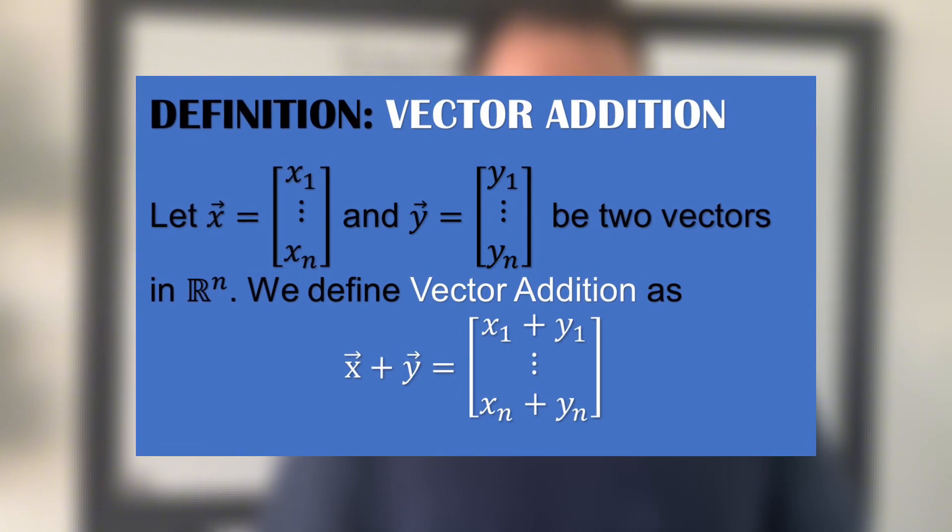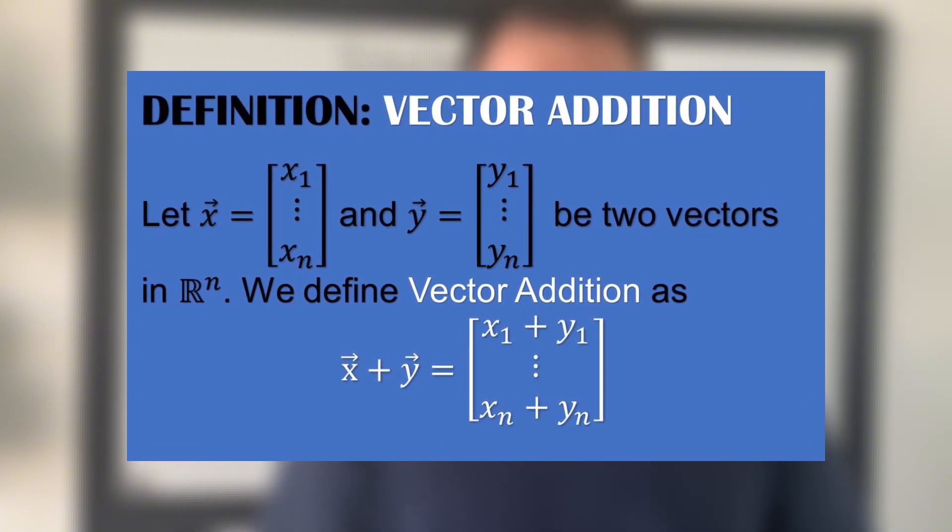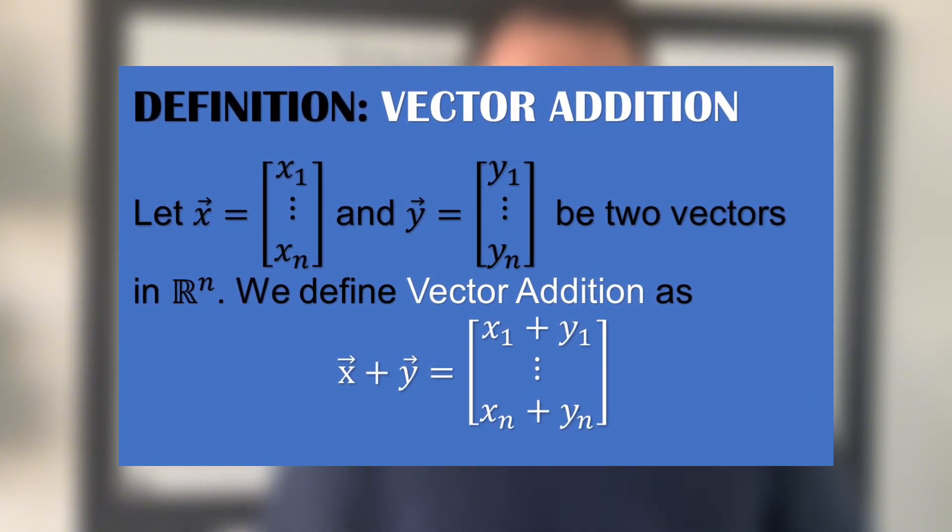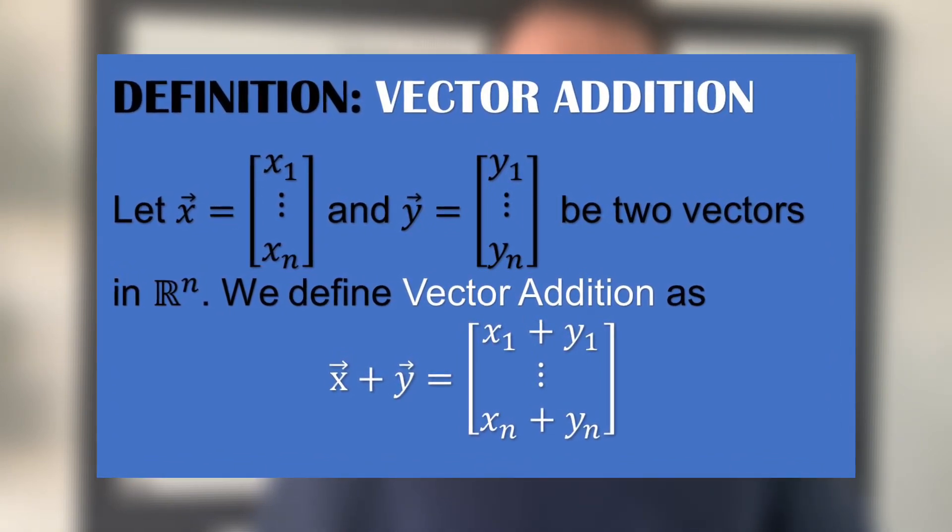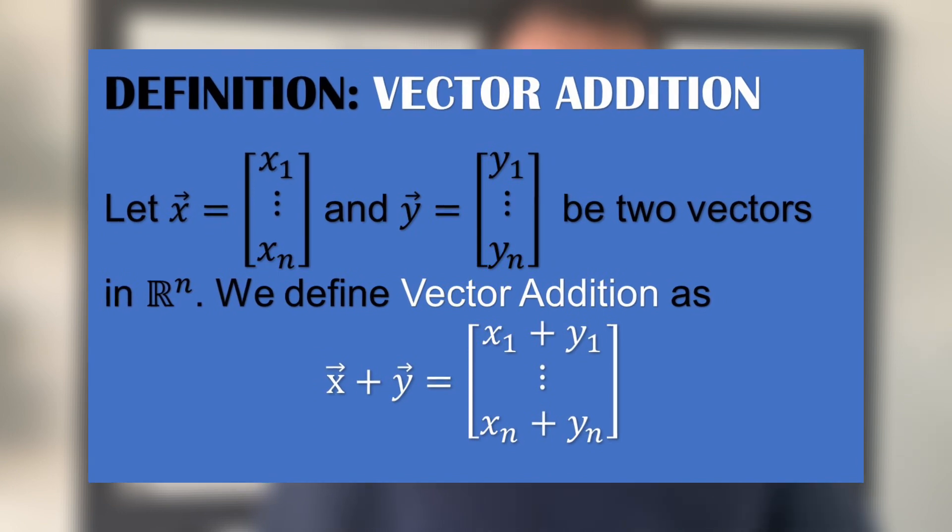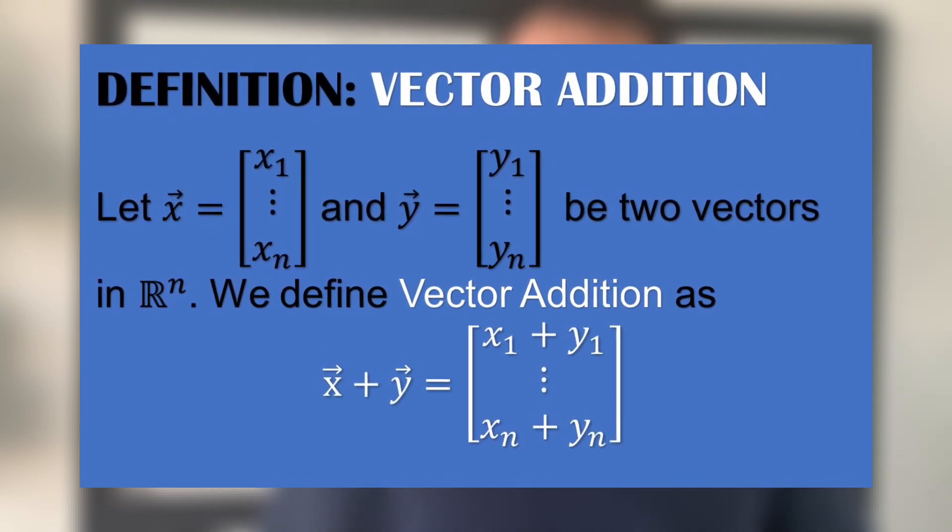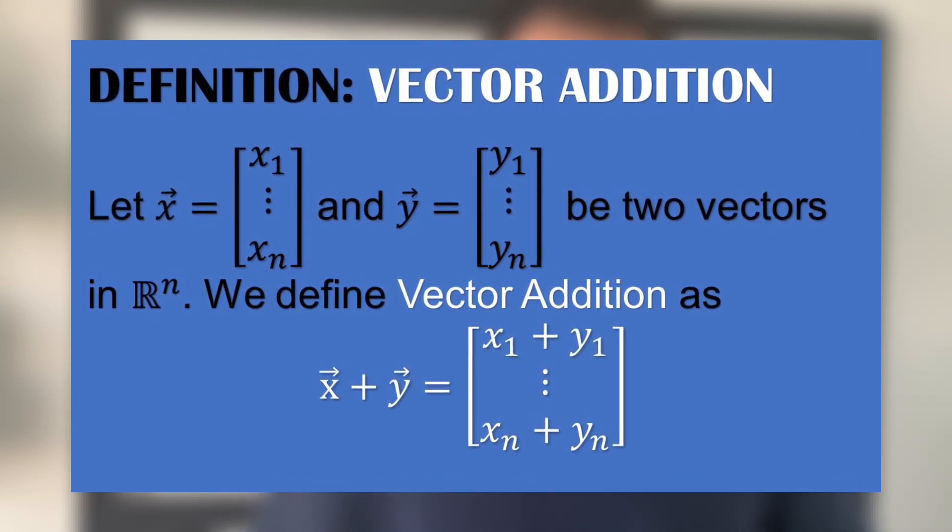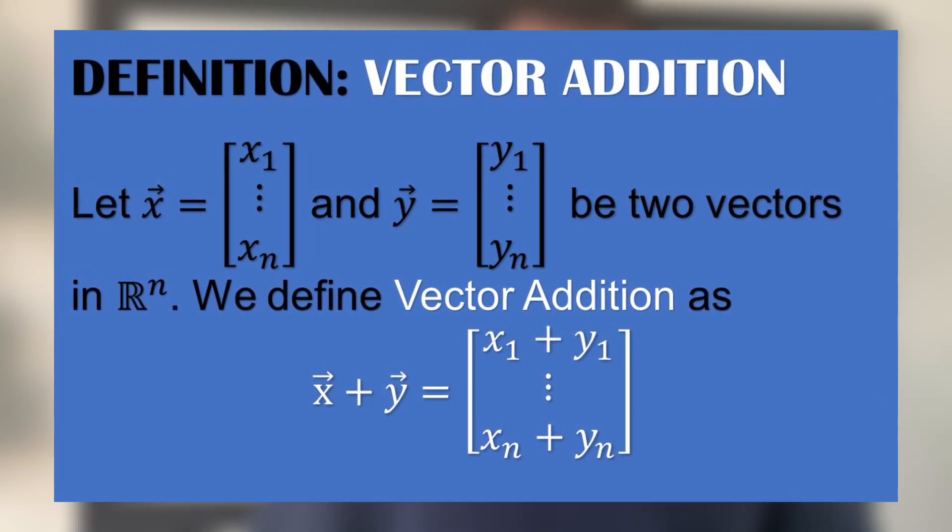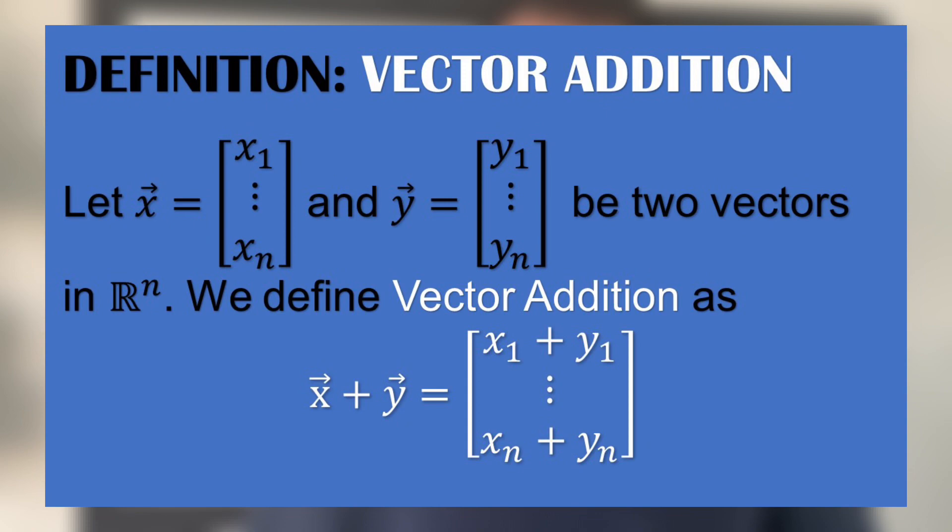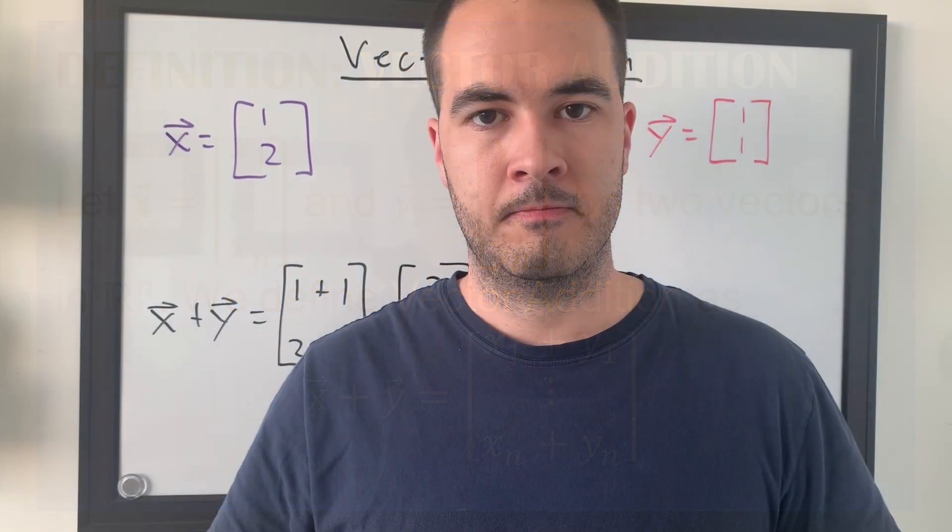Let X and Y be two vectors in Rn. We define vector addition by the vector X plus the vector Y is equal to a new vector where each element is the sum of the subsequent elements in X and in Y. So, the first element is X1 plus Y1, and the last element is Xn plus Yn.